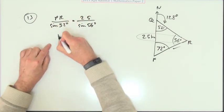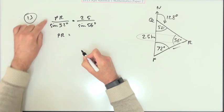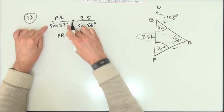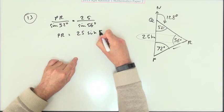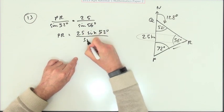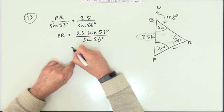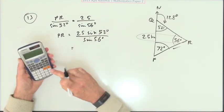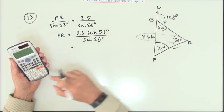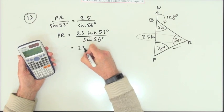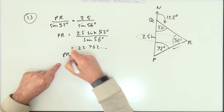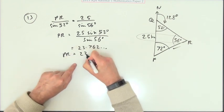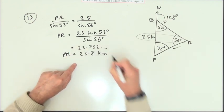One step away now. I want PR on its own. So get rid of this. It's dividing. Take it across and multiply. 25 sine 52 over sine 56. Now let's just press the buttons. And that comes to 23.762 and so on, which we'll probably just round off to one decimal place. 23.8 kilometres.